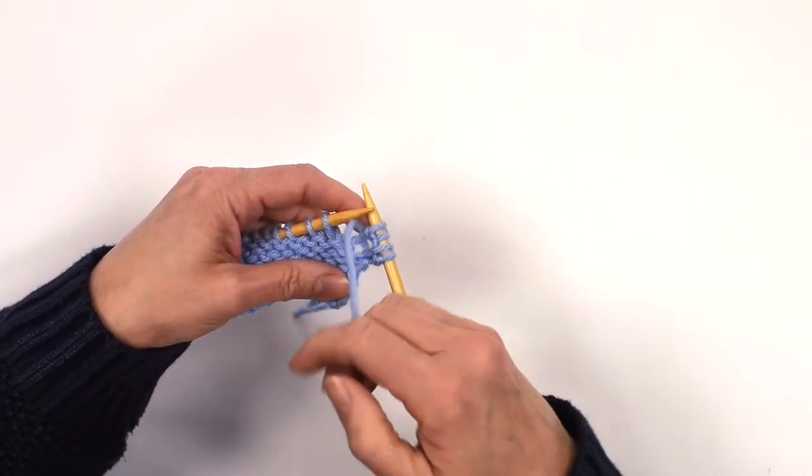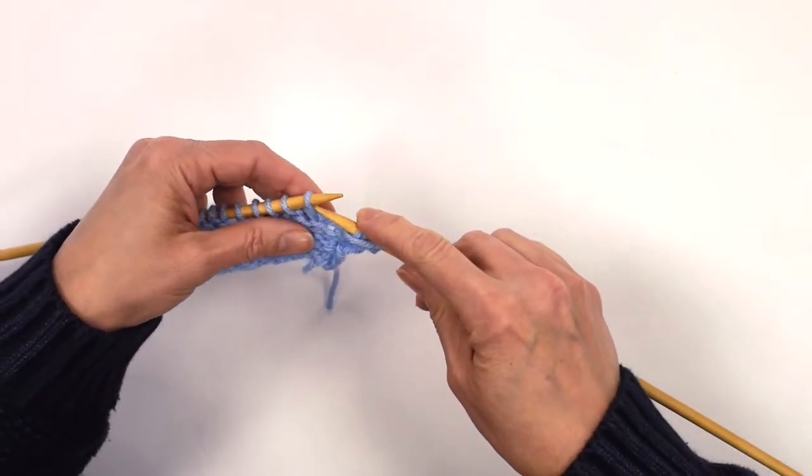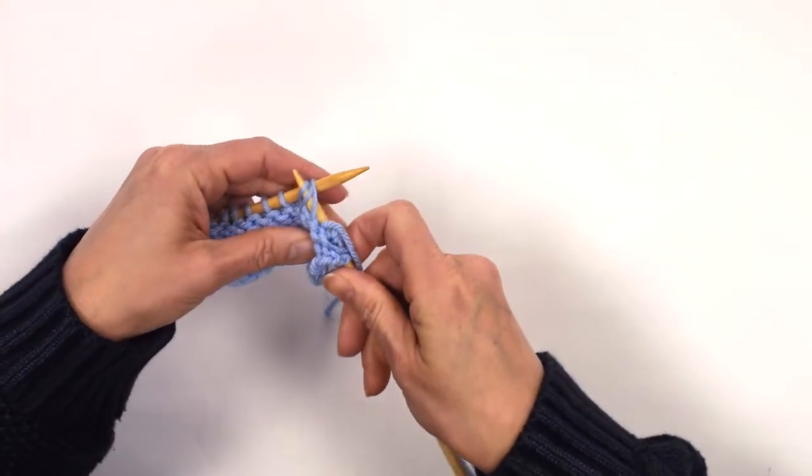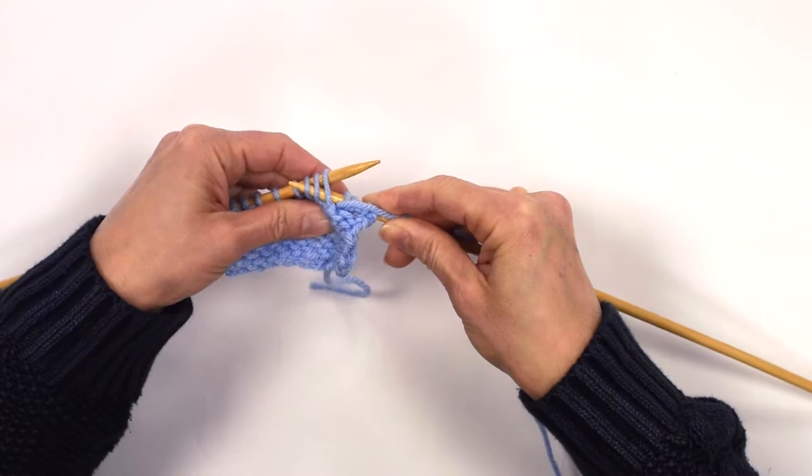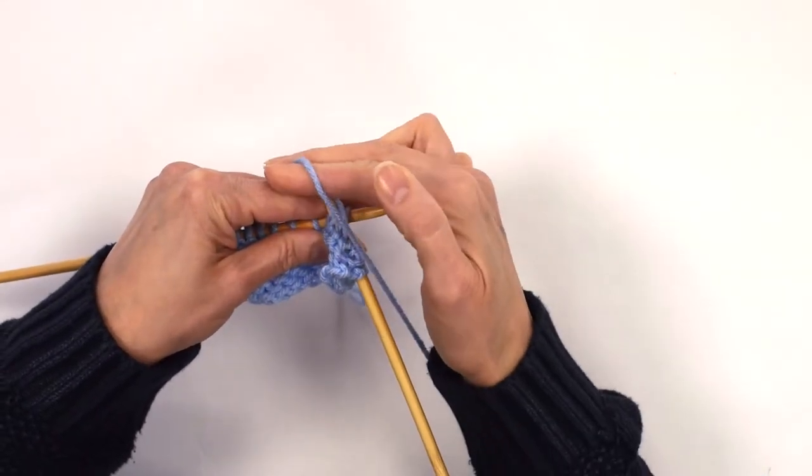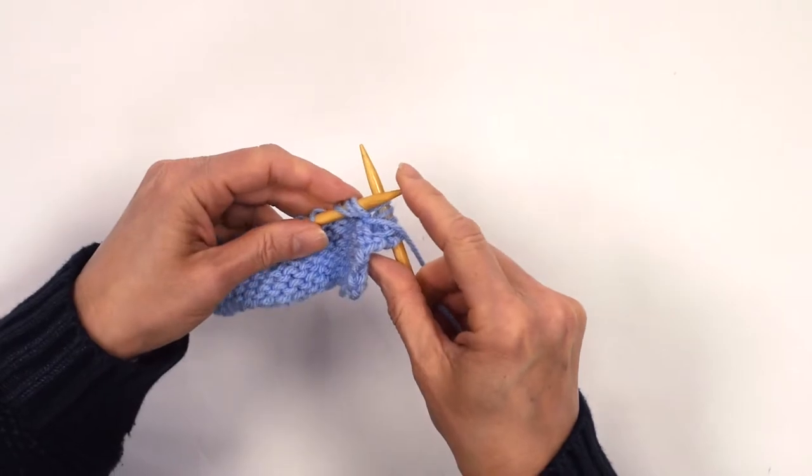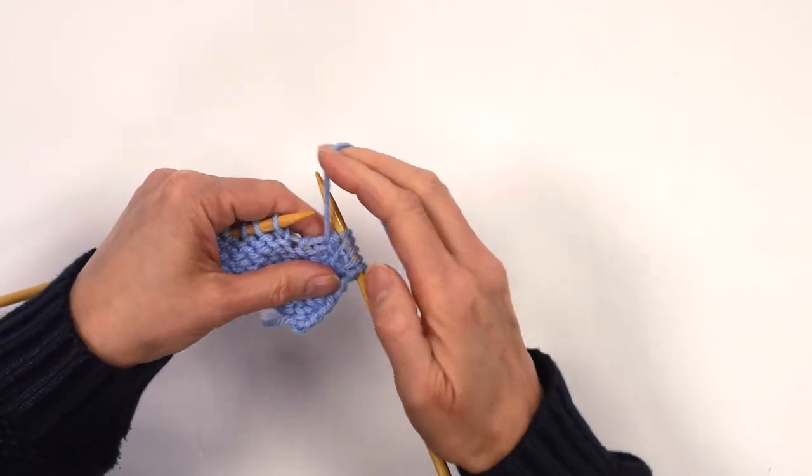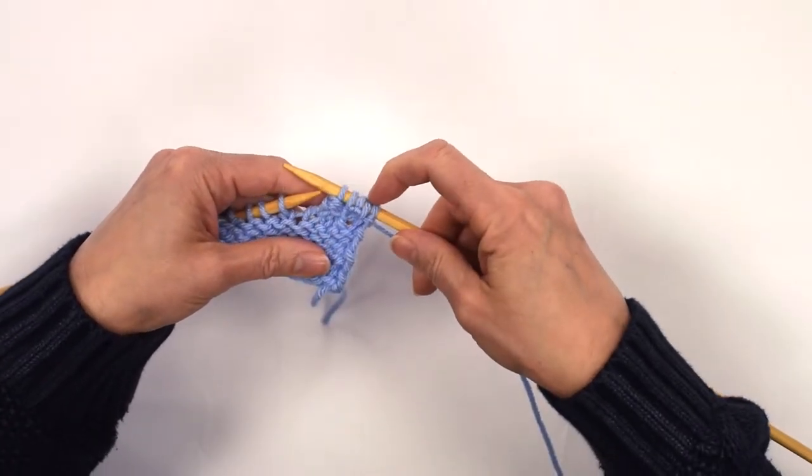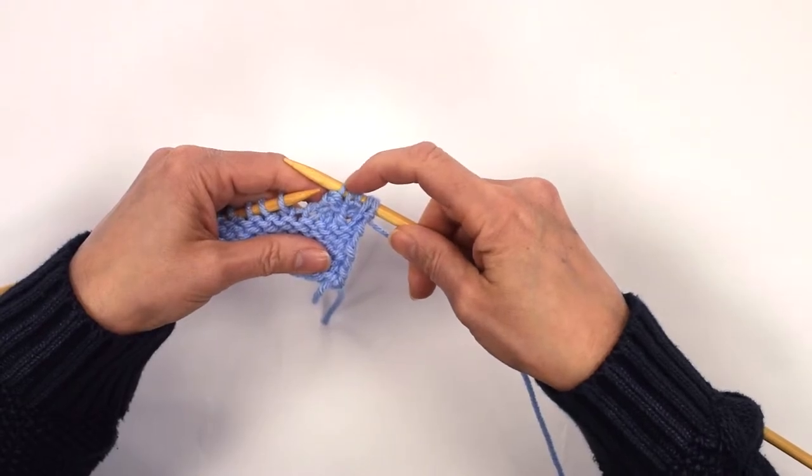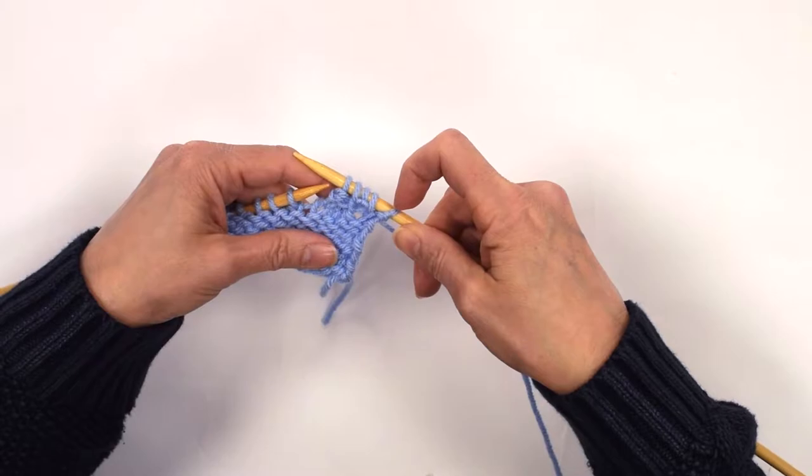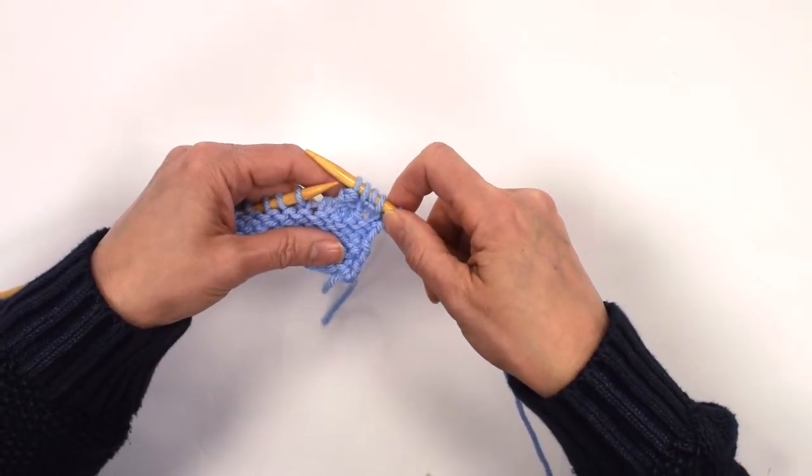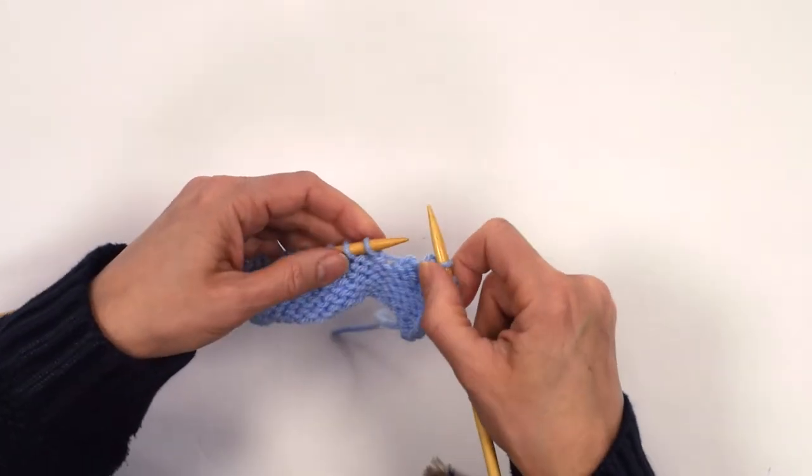The next stitch, you bring your yarn forward this way and you purl three together. So that's putting your needle all the way in, wrap your yarn round, bring it through all three, slip off all three. So you've increased in this stitch and you've decreased in that one. So you've still got four stitches, not including that first one—that one's separate. So let's do that again.